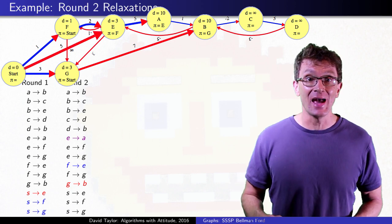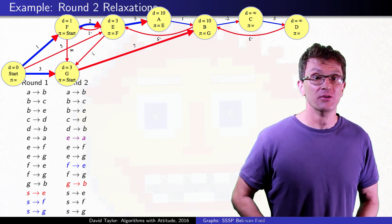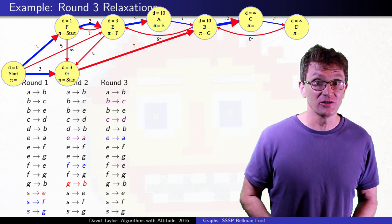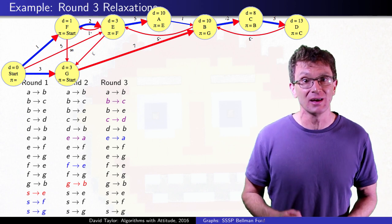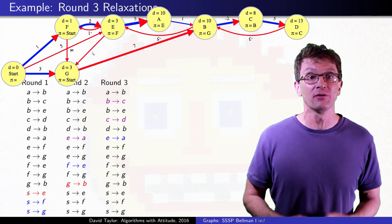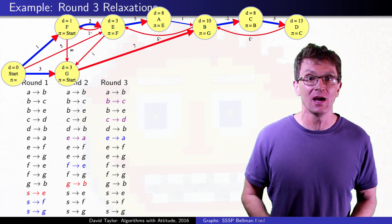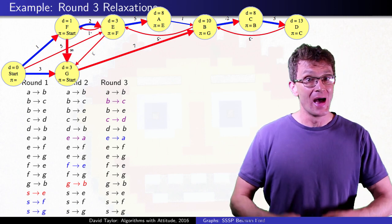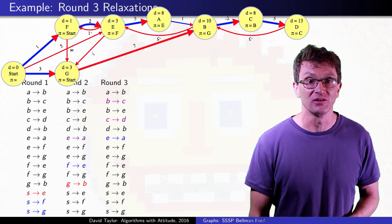The F to E edge relaxes later, correcting E's distance and path. The next round, A gets fixed, and by now you should see that if the edges are ordered in an unlucky way, we get only one level of the shortest path tree fixed each pass through all of the edges. We've done three rounds, and only vertices with shortest paths of three or fewer lengths have the correct distances.